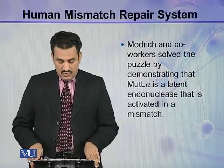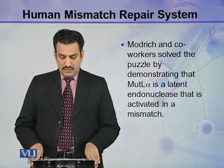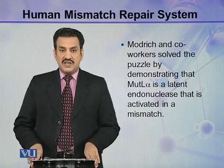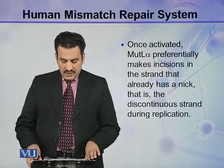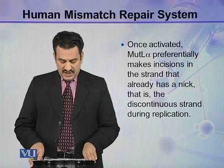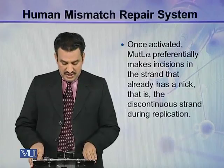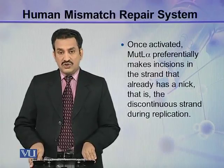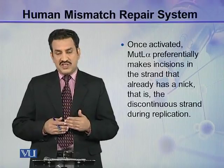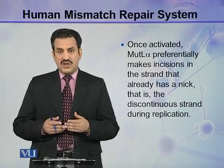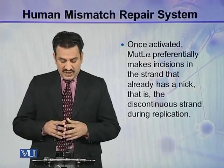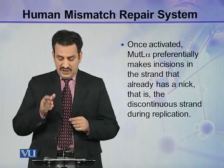Modric and co-workers solved the puzzle by demonstrating that MutL-alpha is a latent endonuclease that is activated in the presence of a mismatch. Once activated, MutL-alpha preferentially makes incisions in the strand that already has a NIC — that is, the discontinuous strand during replication. During replication, this discontinuous strand is the newly synthesized strand and obviously would have a NIC, so MutL-alpha will make an incision in this strand.